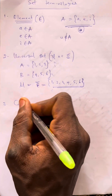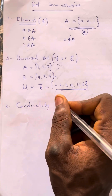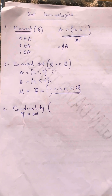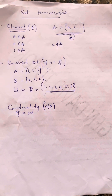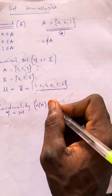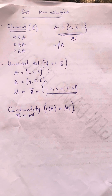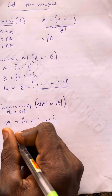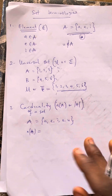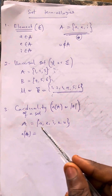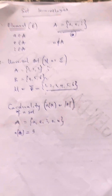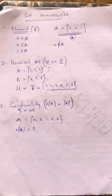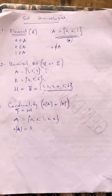Number three, we talk about the cardinality of a set. The notion of cardinality of a particular set is written as N(A) or using absolute value symbols. For example, if set A is {A, E, I, O, U}, then N(A) — the cardinality of this set, meaning the number of elements — is 1, 2, 3, 4, 5, which equals 5.